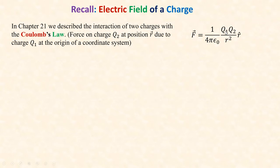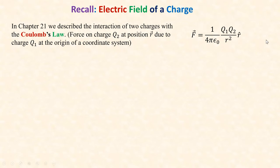If you have two charges Q1 and Q2 at distance r from each other, they apply a force on each other, which can be written using Coulomb's Law. This is the force on charge Q2 due to Q1, which is at the origin. Q2 is at some position vector r, Q1 is at the origin. If both are positive, they repel each other so the force is in the r-hat direction. If one is negative and one positive, they attract, so the force is in the negative r-hat direction toward the center.